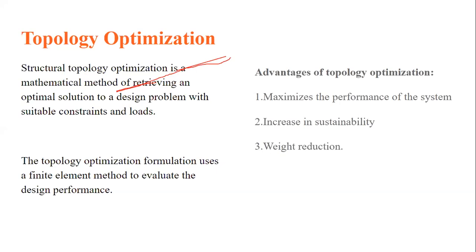Size optimization keeps the same shape but scales it to a different level. For example, a smaller object can be enlarged using a different material with lower density to achieve the same structural performance. Topology optimization deals with the geometry alone — changes are made within the geometry to meet the required conditions. These three methods fall under structural optimization.